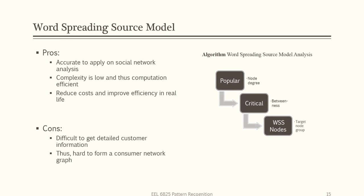So here, the word-spreading source model, the pros have three points. One is accurate to apply on social network analysis, which is true. The second one is complexity is low, and so computation is very efficient. And third, it reduces costs and improves efficiency in real life because we narrow down our targets from all the potential customers to the most important ones and let the word spread out. The cons here is that it is difficult to get detailed customer information, and thus it is very hard to form a consumer network graph.